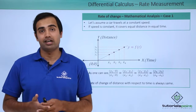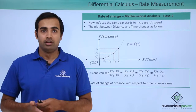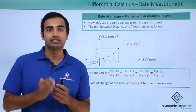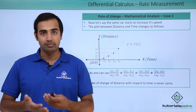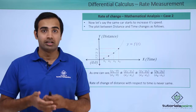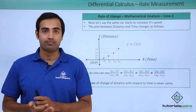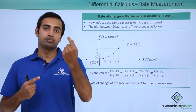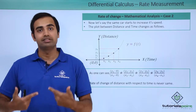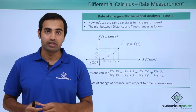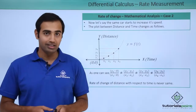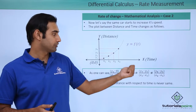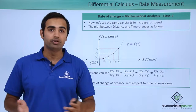Now let's talk about the second case when the car is not travelling at constant speed — rather it is travelling at an increasing speed. If I draw the distance versus time plot for the car in that situation, the graph obtained is a curve. You can see that for equal amounts of time that pass, the car is travelling more and more distance. So none of the ratios representing speed — (y1−0)/(x1−0), (y2−y1)/(x2−x1) and so on — will be equal to each other.